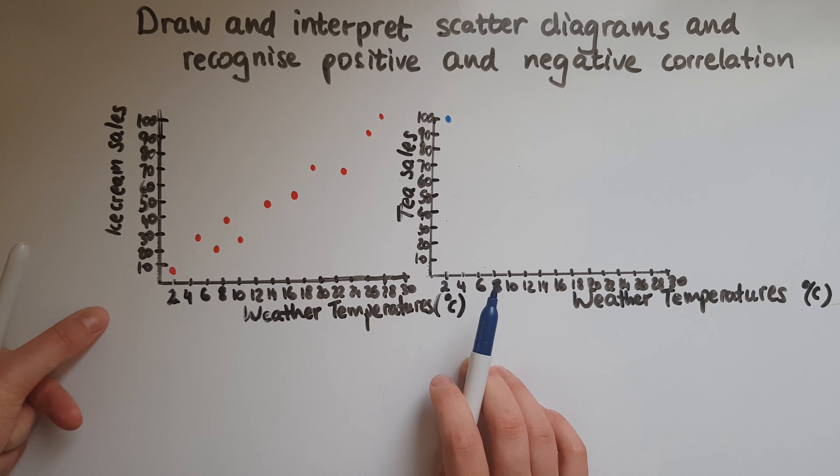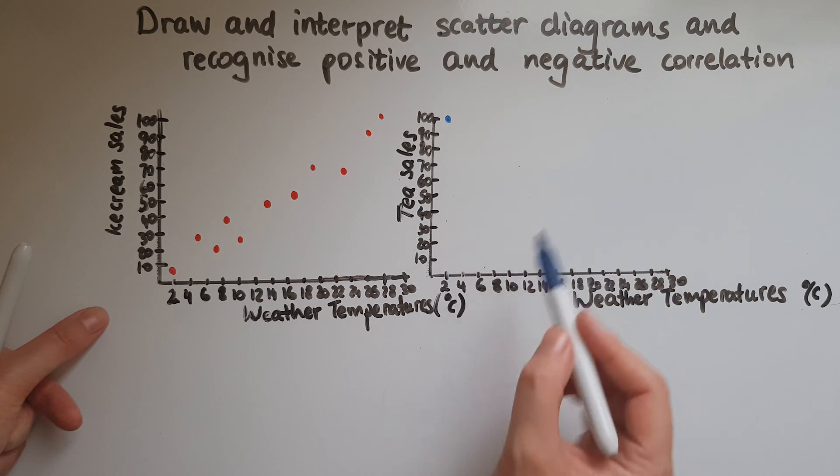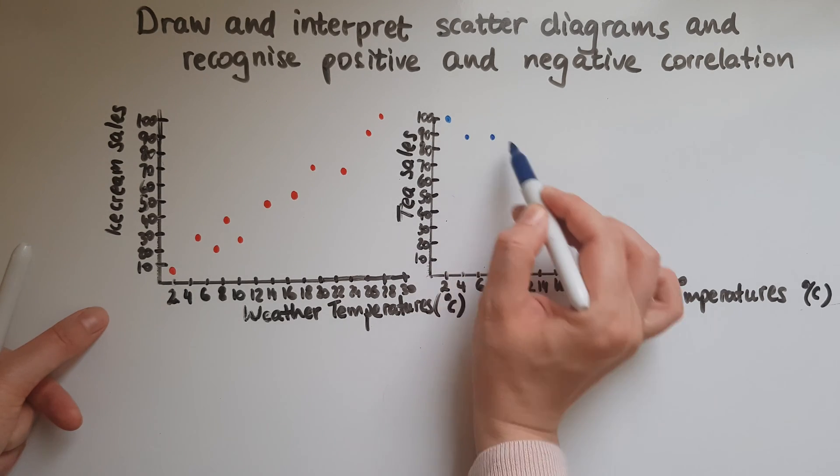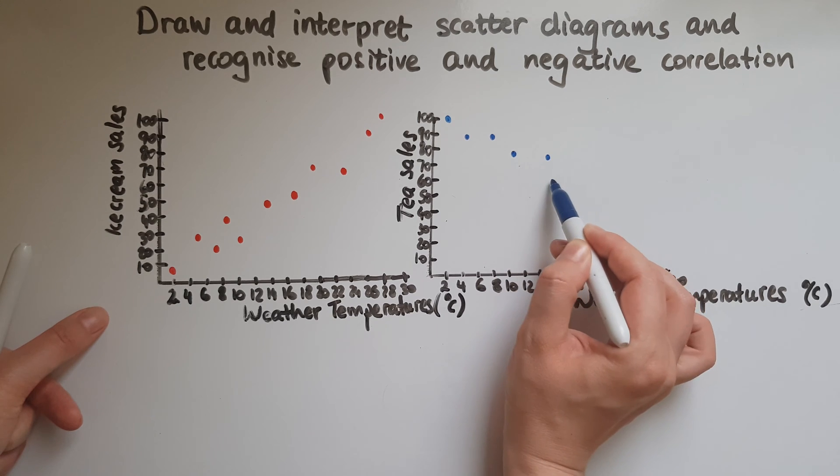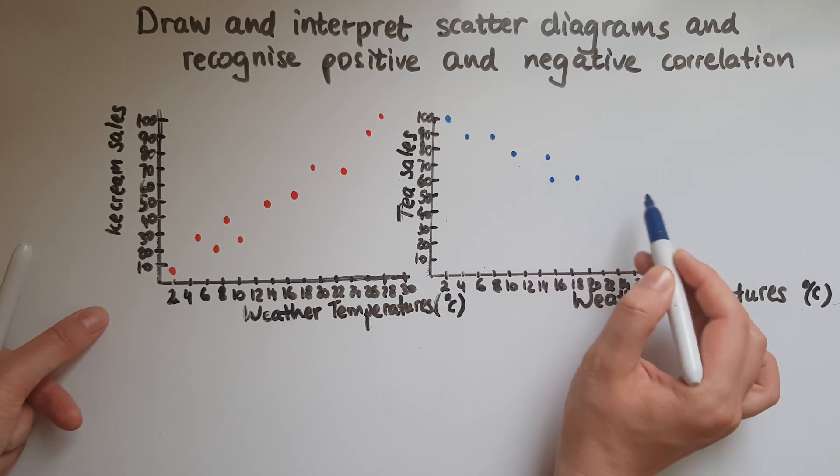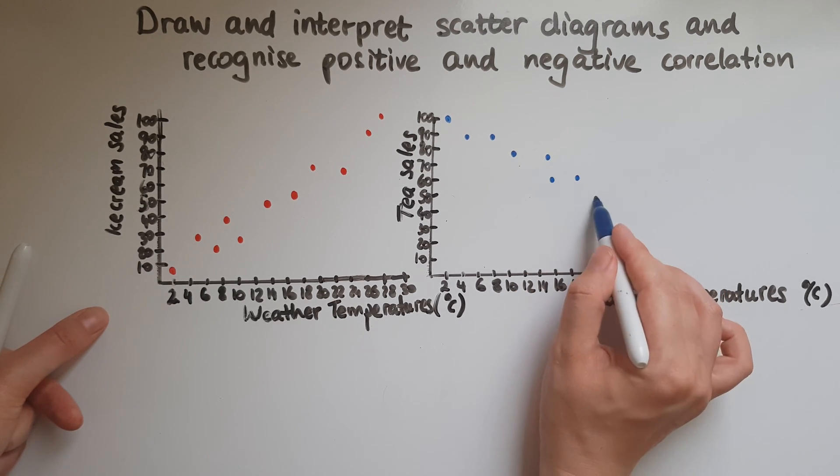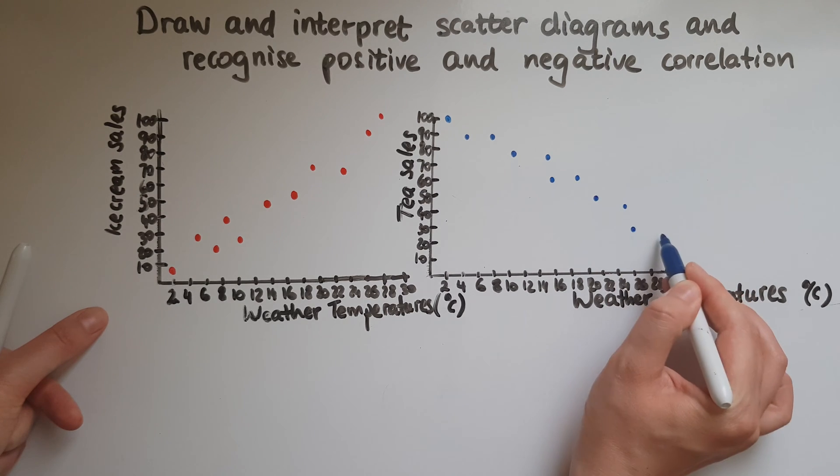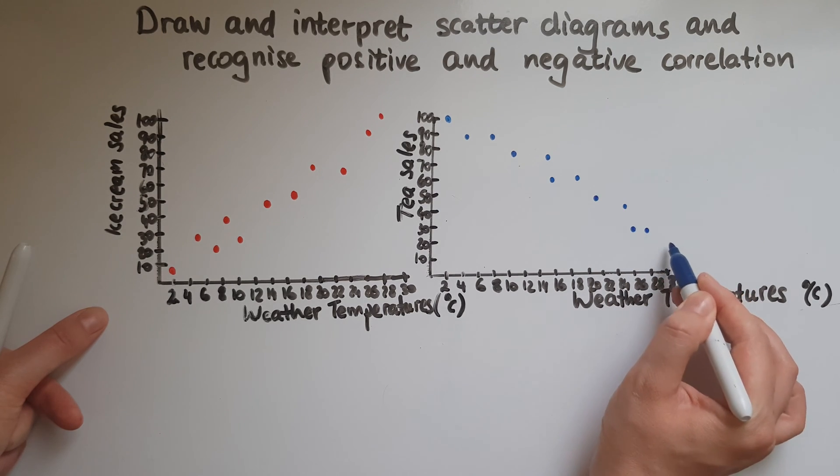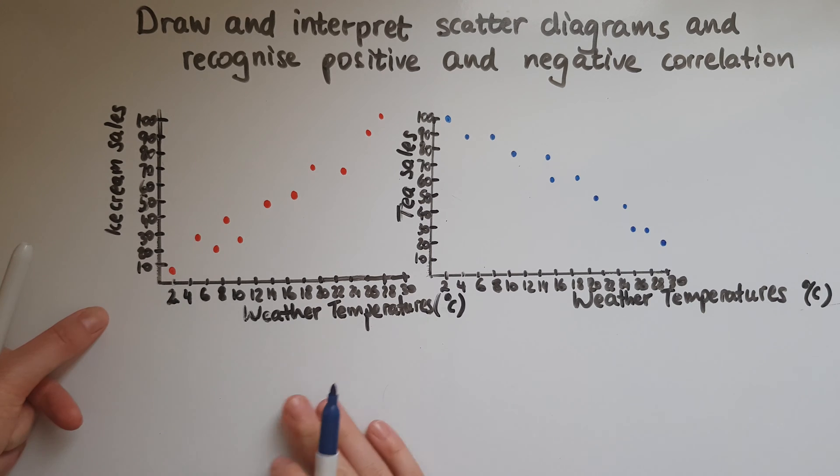The colder it is the more likely people are to buy hot drinks, and then as the temperatures increase the tea sales drop because naturally people are inclined to buy cold drinks or ice cream.